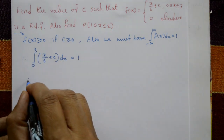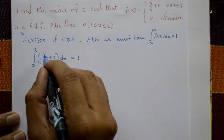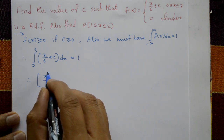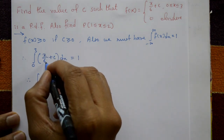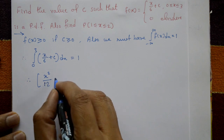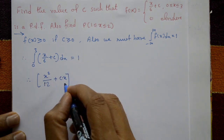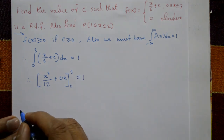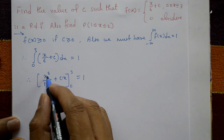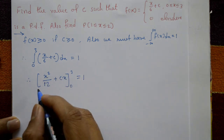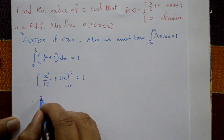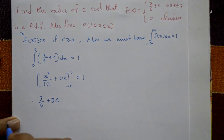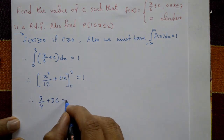Integrating: x squared over 2 divided by 6 gives x²/12, plus cx, with limits 0 to 3, equal to 1. Substituting x = 3: 9/12 = 3/4, plus 3c. Substituting x = 0 gives 0. So 3/4 + 3c = 1.